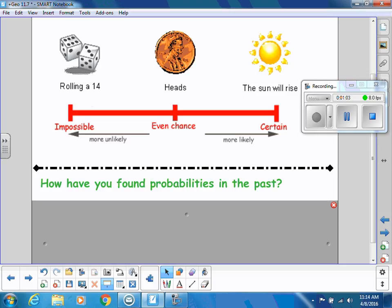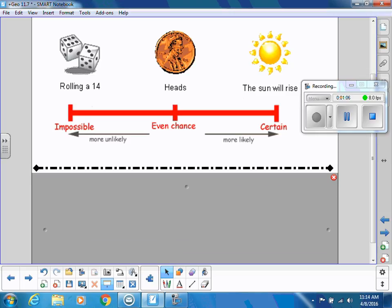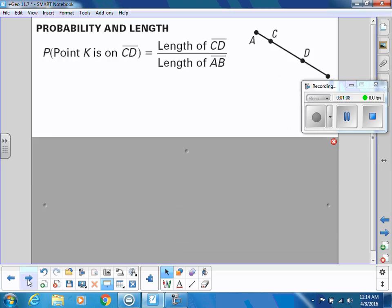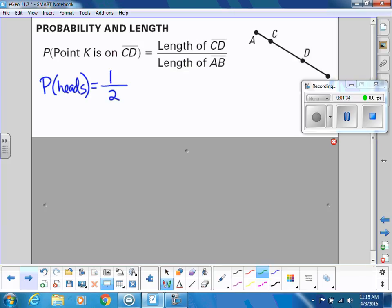So think about how you found probabilities in the past. We're going to do geometric probability and we're going to do the same thing that you've done before. For example, when we were doing probability of heads, we would say there are two possible outcomes, and that would be our denominator. Heads is one of those outcomes, so the probability would be one out of two. The same idea is that geometric probability is going to be a ratio, a fraction.